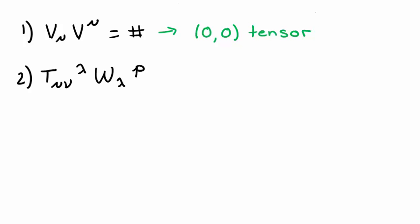Number two also is a tensor, with one contracted index lambda, and three free indices, one upper and two lower. Thus, we say that this is a 1-2 tensor.